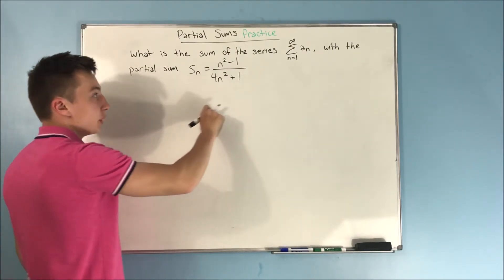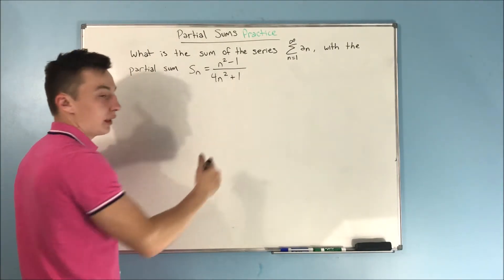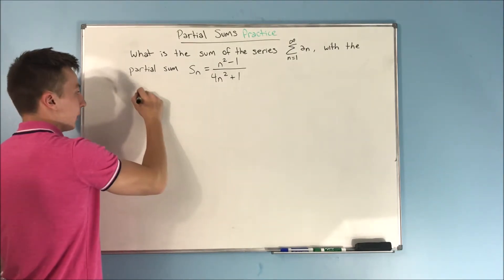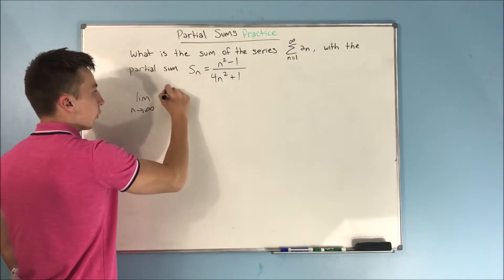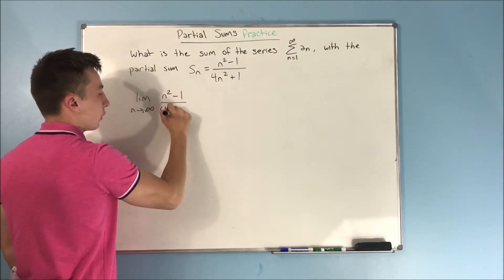If this is the partial sum up to the nth term, then we want that nth term to be the whole entire series, and how we do that is by taking that limit. The limit as n approaches infinity of this n squared minus 1 over 4n squared plus 1.